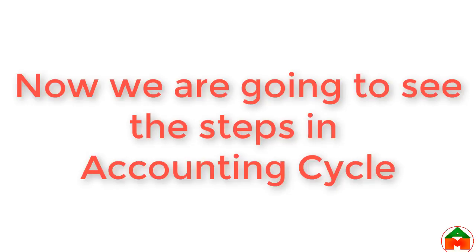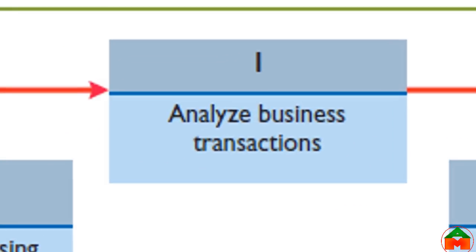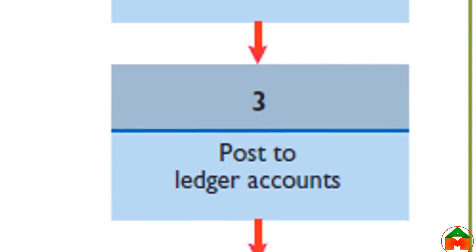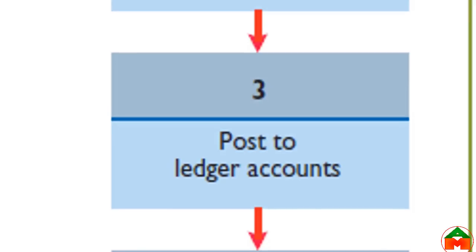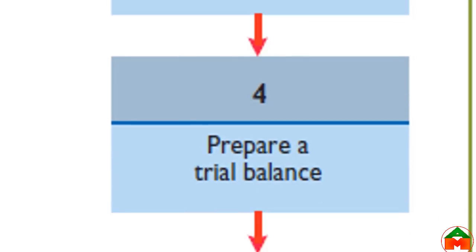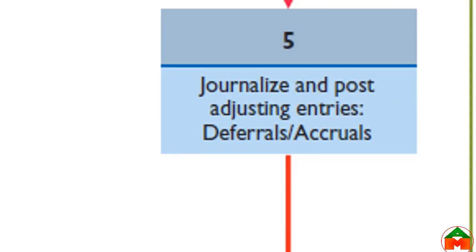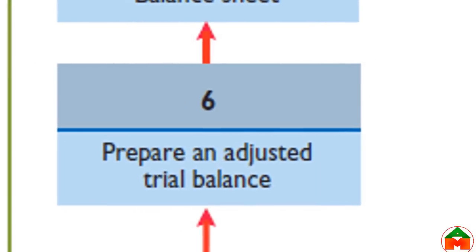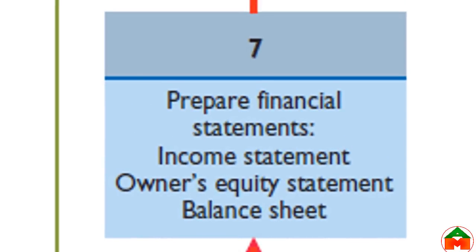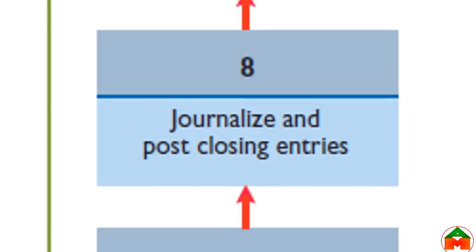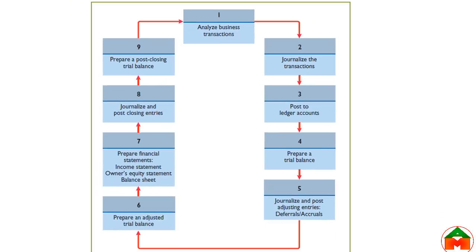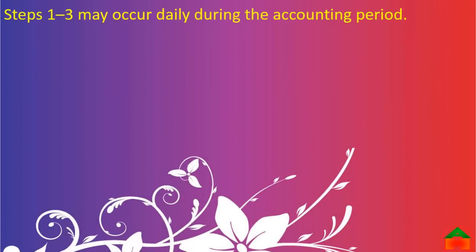Now we are going to see the steps in the accounting cycle. Step one: analyze business transactions. Step two: journalize the transactions. Step three: post to ledger accounts. Step four: prepare a trial balance. Step five: journalize and post adjusting entries. Step six: prepare an adjusted trial balance. Step seven: prepare financial statements. Step eight: journalize and post closing entries. Step nine: prepare a post-closing trial balance.